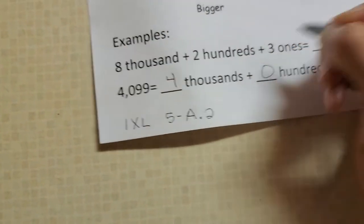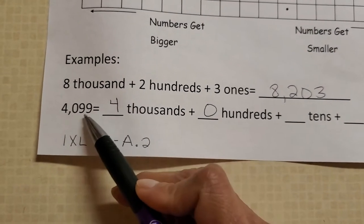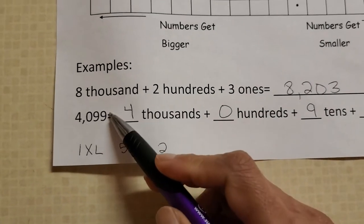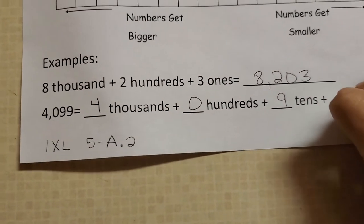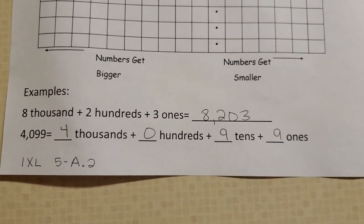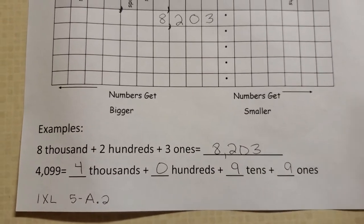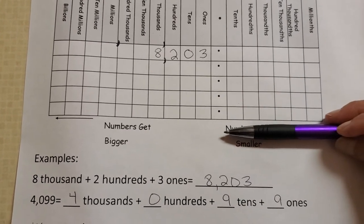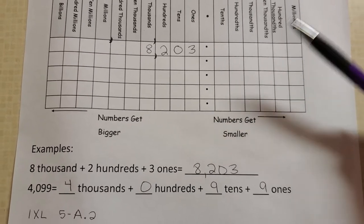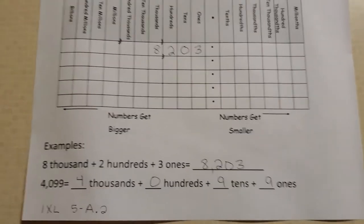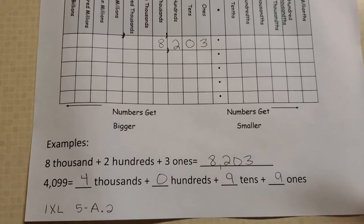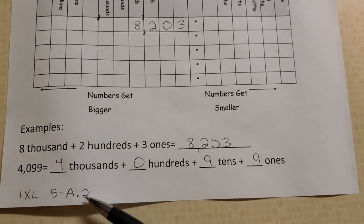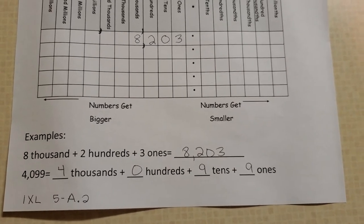There are 9 tens and 9 ones. So that's how we would fill it out. Use the rest of these lines to help you while you're in IXL. Use your paper if you have any questions. Give me a call. You will be looking at math IXL, fifth grade, letter A, number 2. Get started, bye.